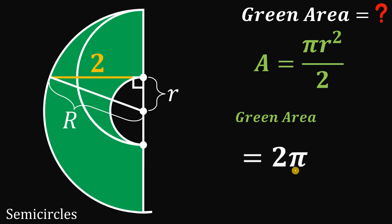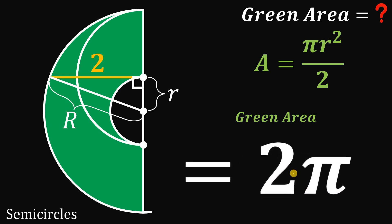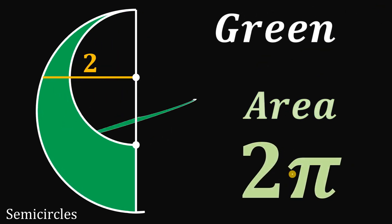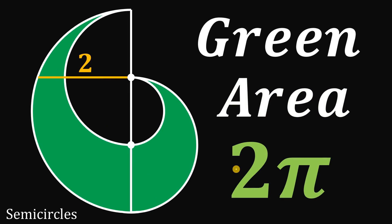Given this figure, the total green area must be equal to 2π square units. And as always, we are done.